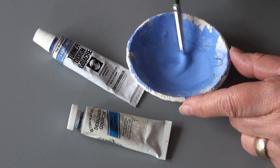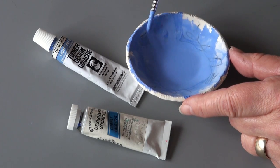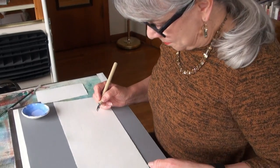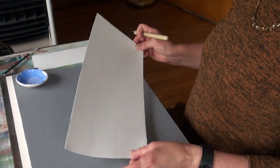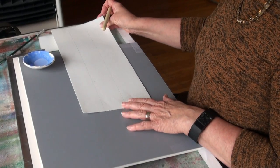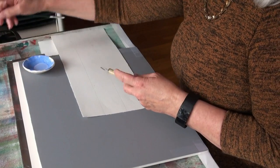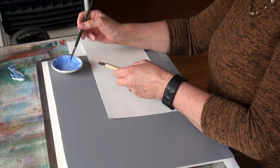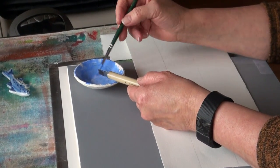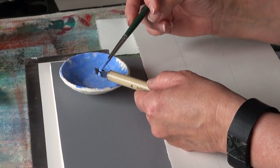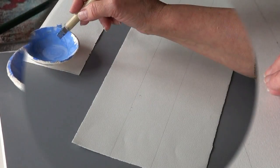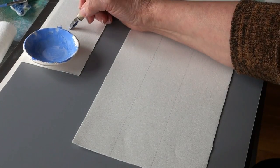I add water till it's about the consistency of whole milk or tomato soup. The paper for this project is Arches Text Wove and the letters will be made with an automatic pen, which is a fairly large pen. As I fill it, it holds enough pigment to make about one letter, which is about seven pen widths tall, or in this case two inches high.